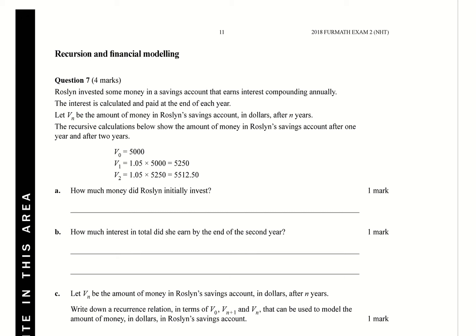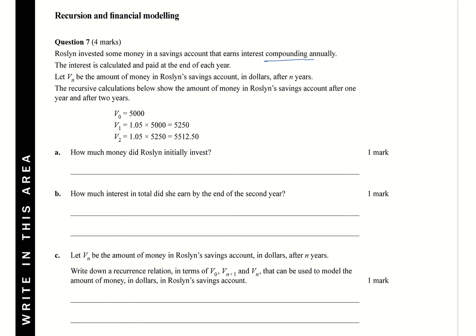It's a four marker. So Roslyn invested some money in a savings account. It's compounding annually. And so if I'm compounding annually here, which is calculated and paid at the end of each year, let VN, so it's paid at the end of each year, let VN be the amount of money in Roslyn's savings account in dollars after N years. That's sort of a normal thing we've got there. The recursive calculations below show the amount of money in her account after one and two years.